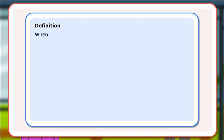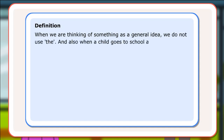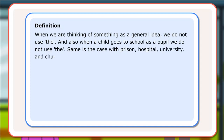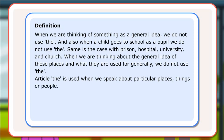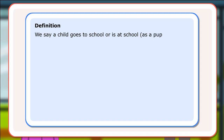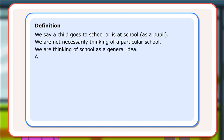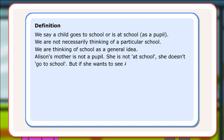Definition: When we are thinking of something as a general idea, we do not use 'the.' Also, when a child goes to school as a pupil, we do not use 'the.' The same is the case with prison, hospital, university, and church — when we are thinking about the general idea of these places and what they are used for generally, we do not use 'the.' Article 'the' is used when we speak about particular places, things, or people. When a child goes to school as a pupil, we are not necessarily thinking of a particular school. But if Alison's mother wants to see Alison's teacher, she goes to the school — Alison's school, a particular school.